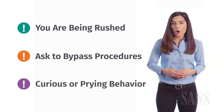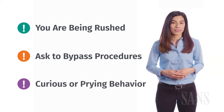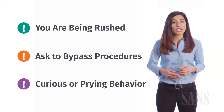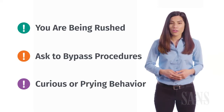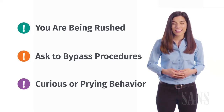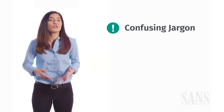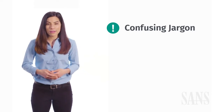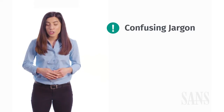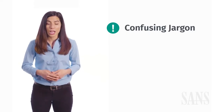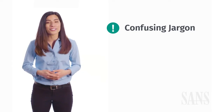If someone is being overly curious or prying — if someone asks for information they shouldn't have access to, or their questions make you uneasy — it's time to be suspicious. If a request is using confusing jargon, sometimes attackers use technical-sounding language to convince you to just go along with their scheme. Don't act if you don't understand.